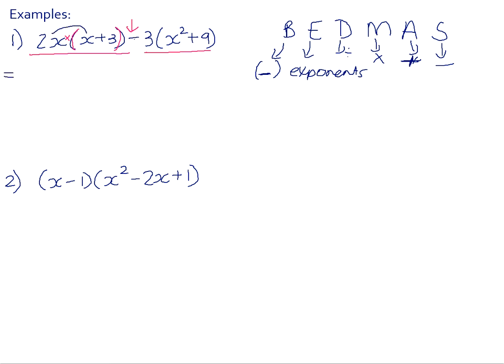So we do the distributive law. 2x times x is 2x squared. 2x times positive 3 is positive 6x. Negative 3 times x squared is negative 3x squared. Negative 3 times positive 9 is negative 27.